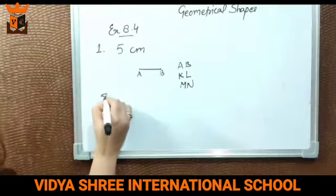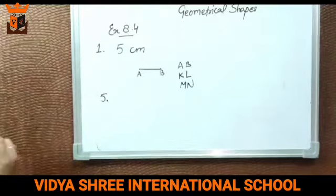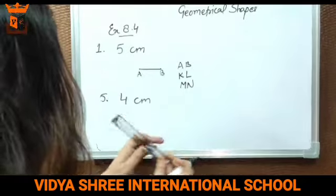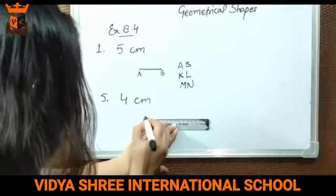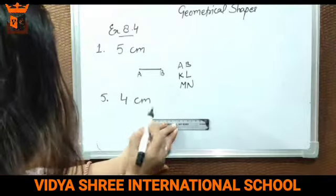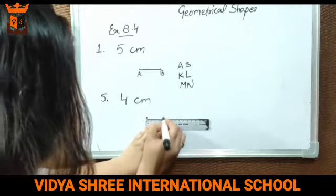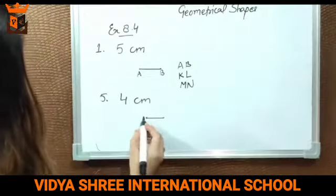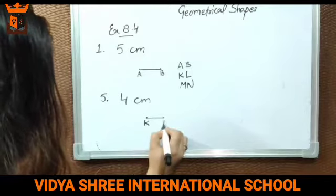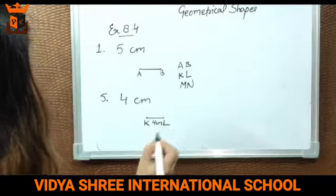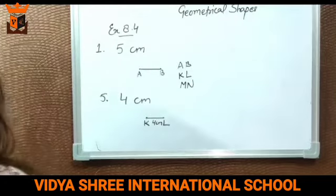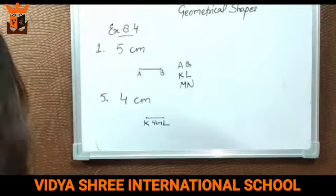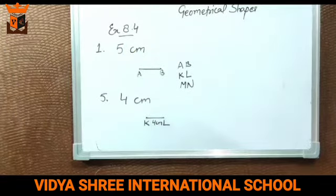Now another one — the fifth item is four centimetres. We follow the same procedure. We make a point at zero, then count one, two, three, four — four centimetres. We put a mark at four. Now we join them and give the name KL to this line segment. The length of this line segment is four centimetres. Similarly students, you have to make these line segments in your notebook and complete exercise 8.4.